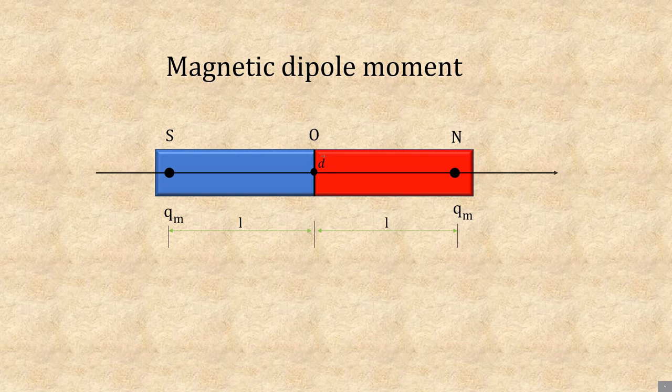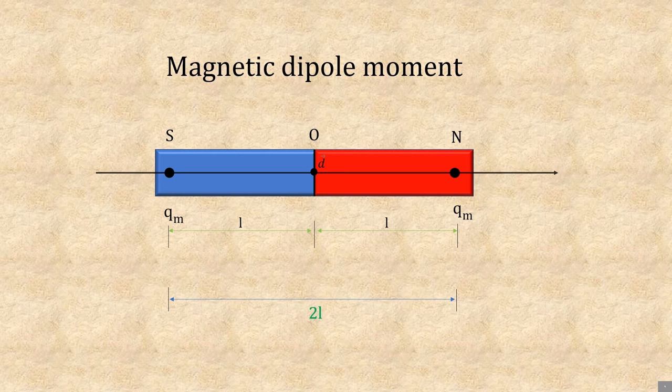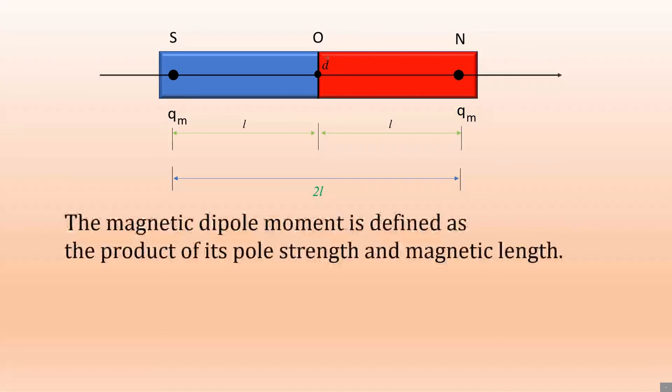The distance is the total distance, so the total magnetic length is 2l. So what is magnetic dipole moment?